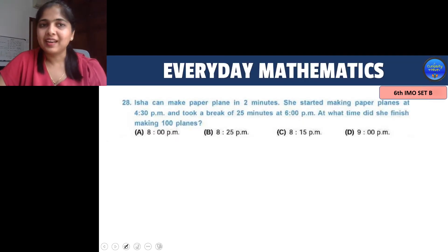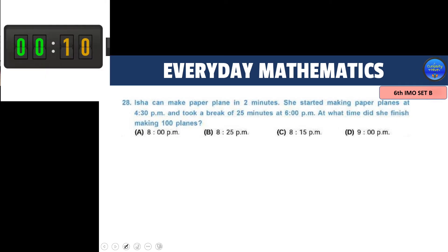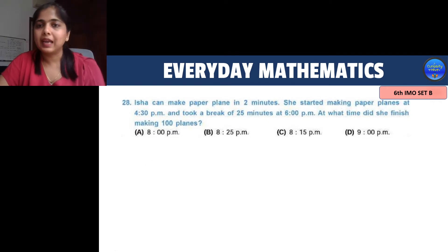Let's go to our next question. Let's see how you solve this. Now here let's mark the timeline. What they say is that Isha can make paper plane in 2 minutes. She started making paper planes at 4:30 pm and took a break of 25 minutes at 6 pm. That means from 4:30 to 6 pm she was making planes which is equal to 1 hour and 30 minutes for which she was making planes. Then she took a break of 25 minutes and she started making planes again at 6:25 and they are asking us what time did they finish.